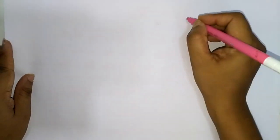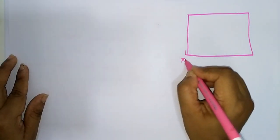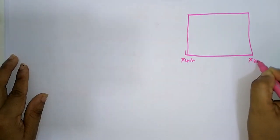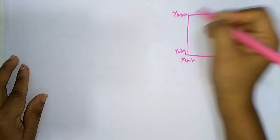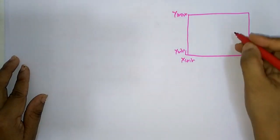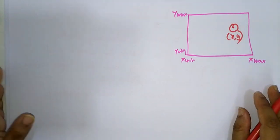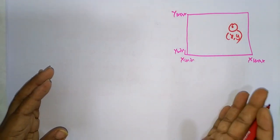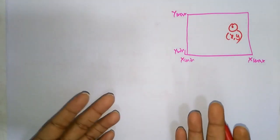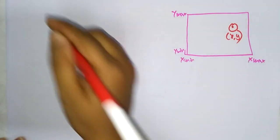Let's take this as a clipping window. A clipping window has x minimum, x maximum, y minimum, and y maximum. Inside the clipping window we have a point — let's call it point (x, y). We need to check whether this point is inside the window or not, and for that we need to check some conditions.